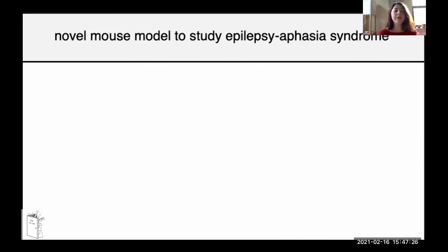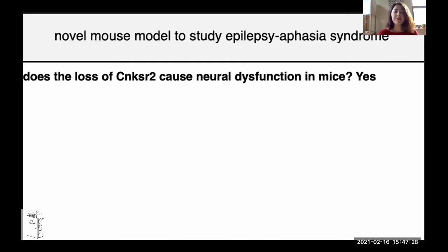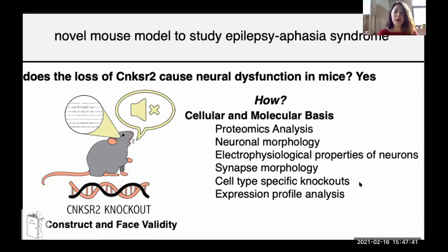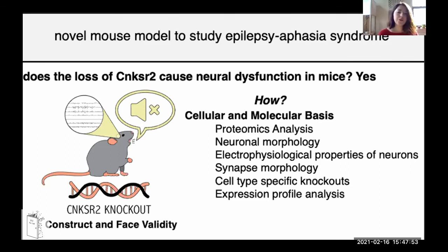To summarize, by generating and extensively characterizing this mouse knockout line, we now have a good in vivo model to study epilepsy aphasia syndrome. Other aspects of my work I didn't have time to cover involve understanding the cellular and molecular basis of this disease, and I think we are getting close to understanding how mutations in this gene cause the syndrome by utilizing this mouse model.